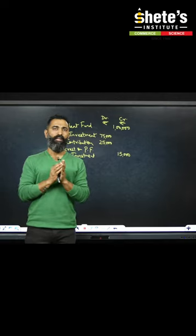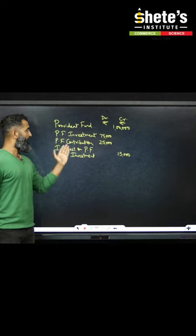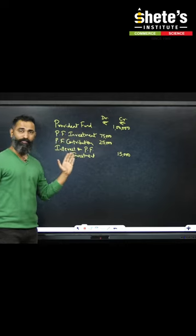Okay, so my dear students, in many final accounts you get these four names: Provident Fund, P.F. Investment, P.F. Contribution, and Interest on P.F. Investment.